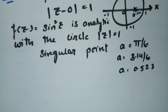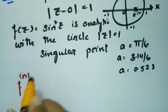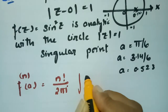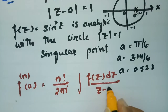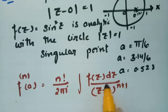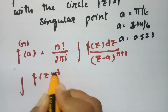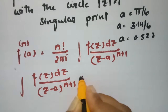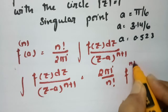Since the singular point is within the circle, we can apply Cauchy's integral formula. The formula states: f⁽ⁿ⁾(a) = (n! / 2πi) · ∮ f(z)/(z - a)^(n+1) dz. Rearranging, the integral equals (2πi / n!) · f⁽ⁿ⁾(a).